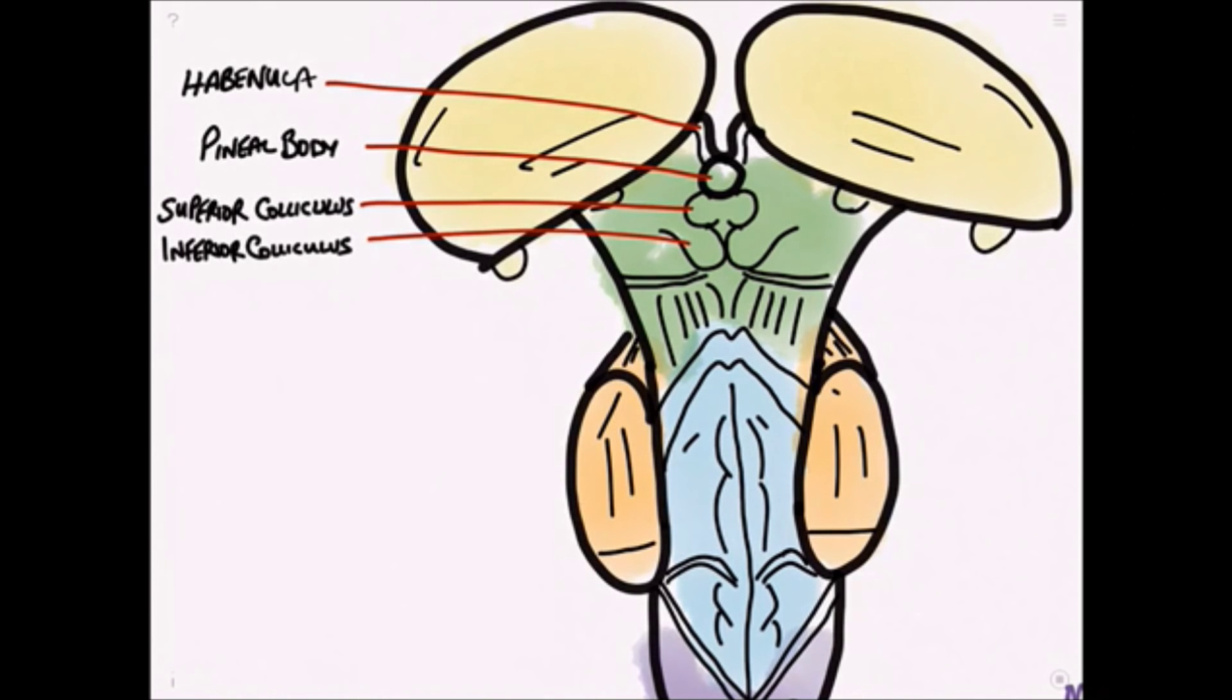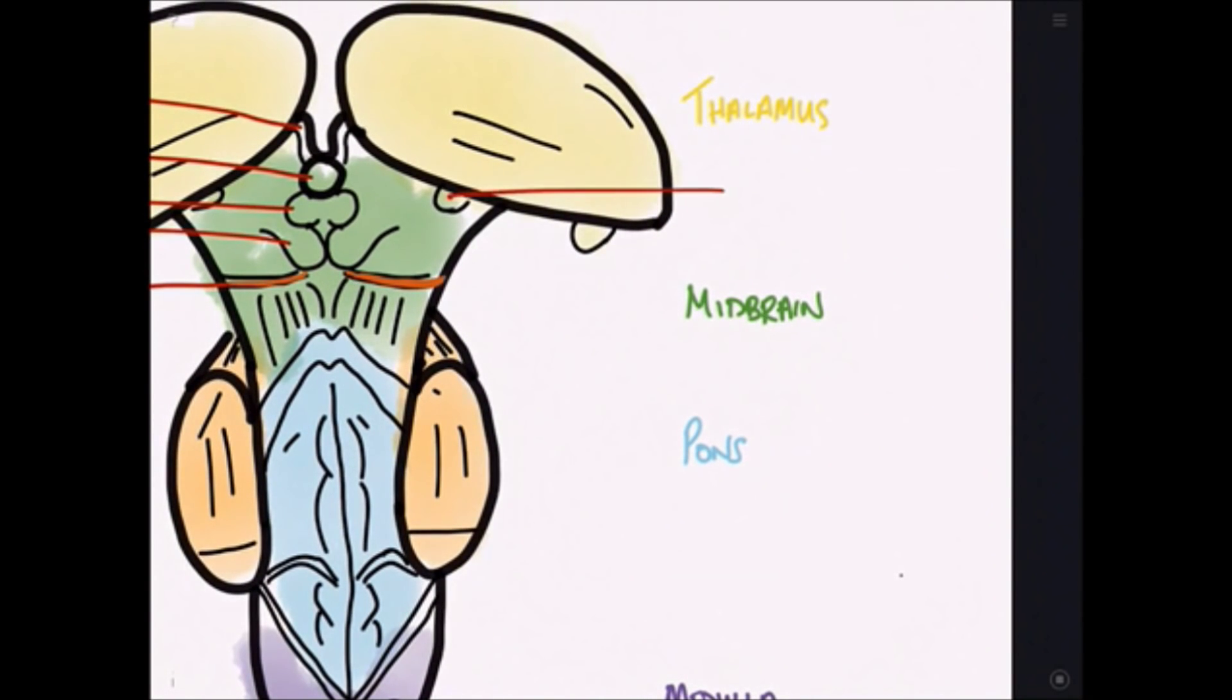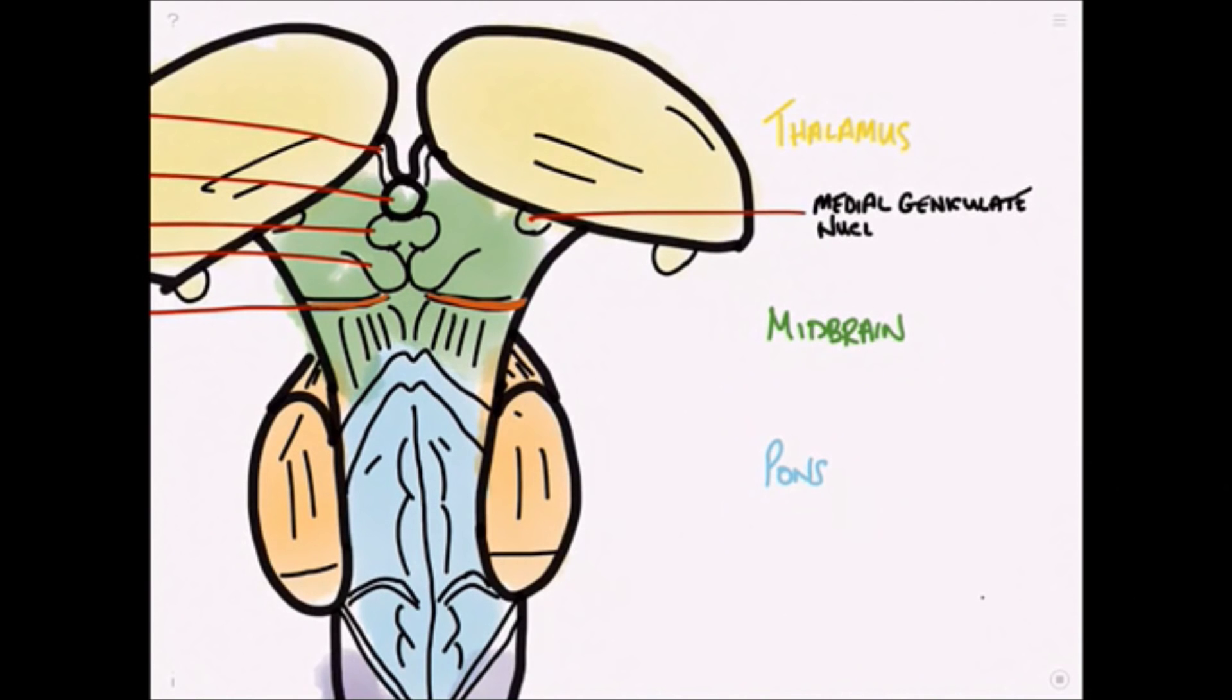This structure is the trochlear nerve and if we just come over to the other side here we can label this, this is the medial geniculate nucleus and lateral to that of course is the lateral geniculate nucleus. One of my favorite parts of the brain actually so I'm looking forward to making a new video on that.